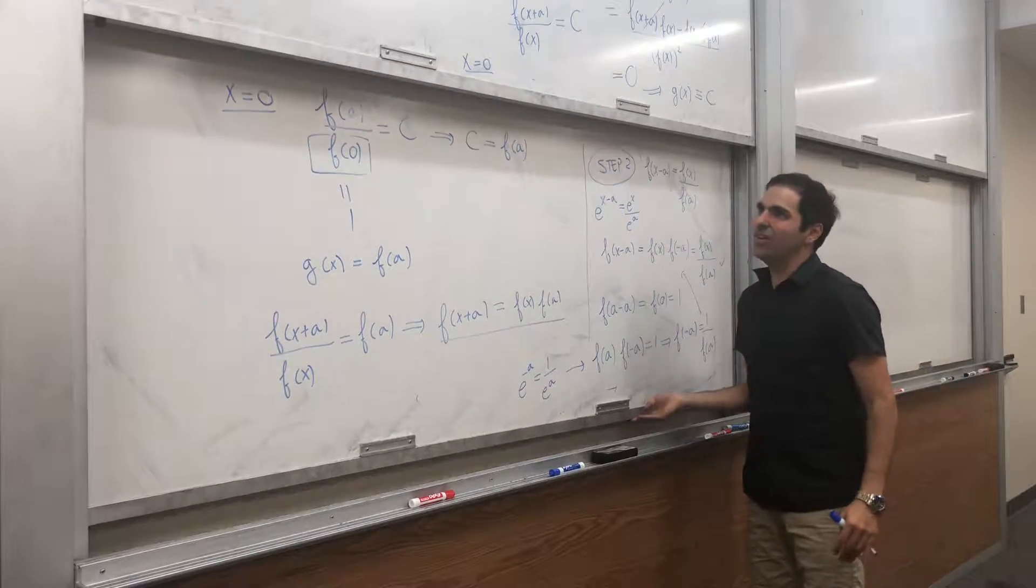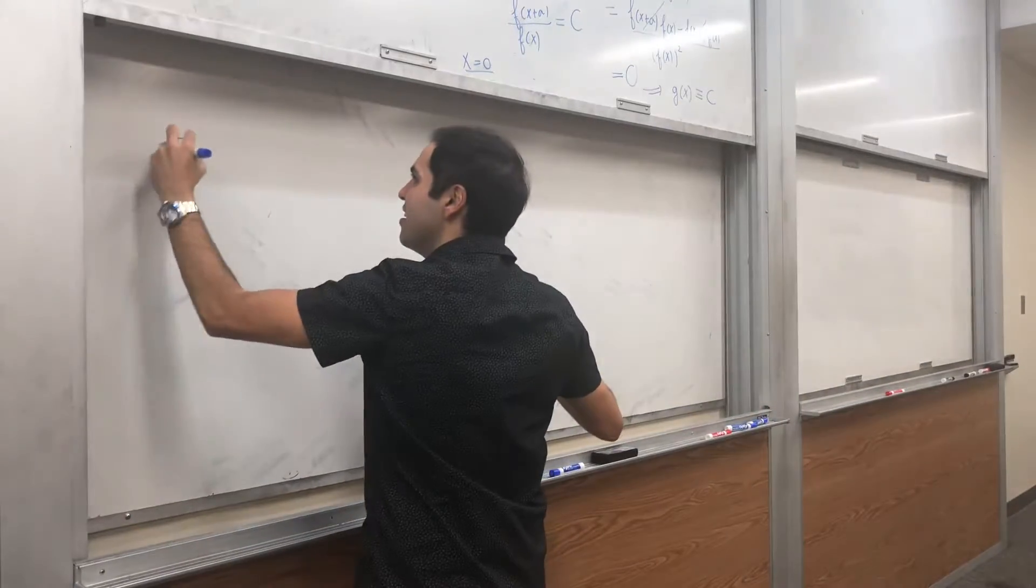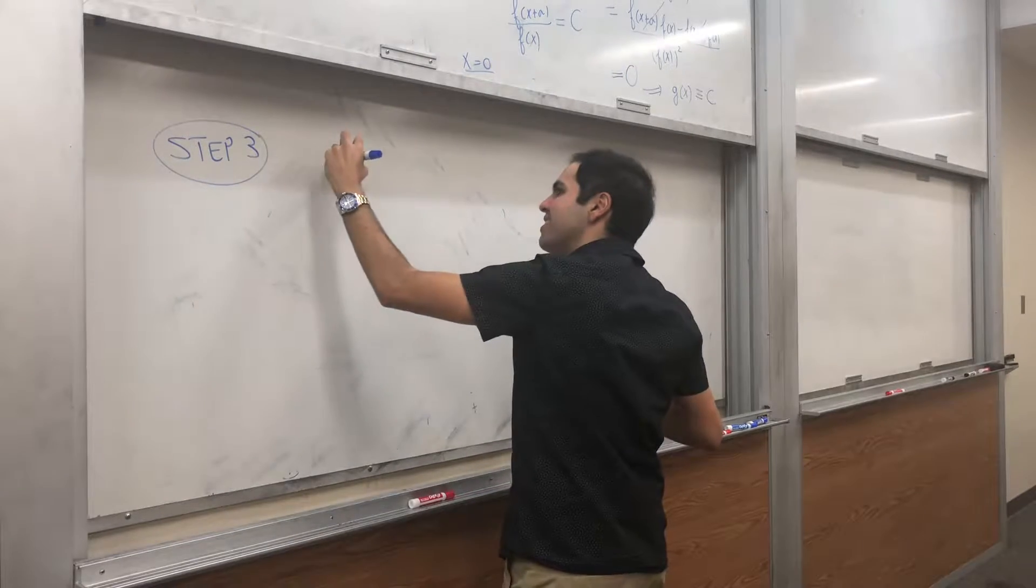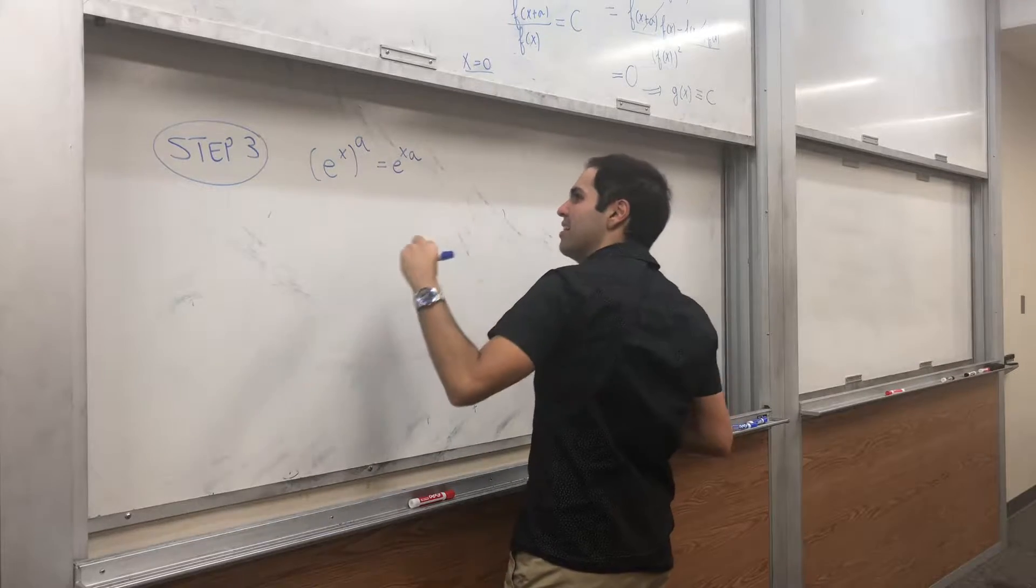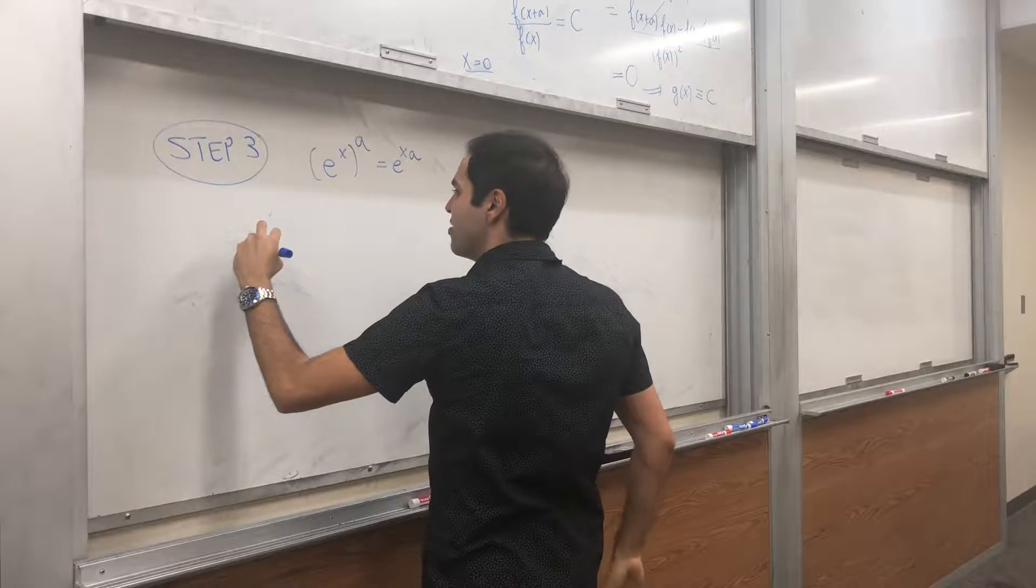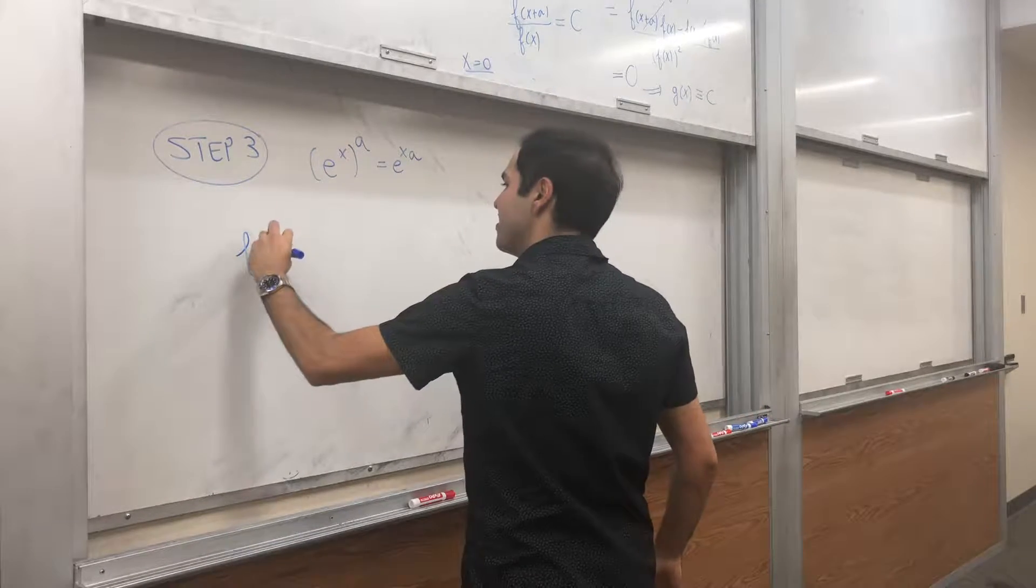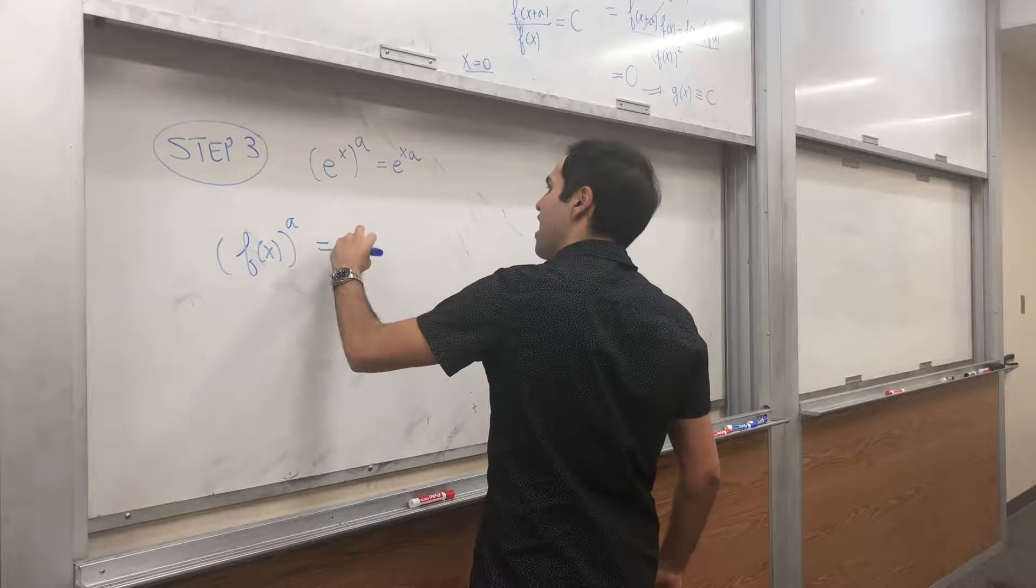Last but not least, let's show the third property of e to the x. So, step three. Let's show basically that e to the x to the a is e to the x a. So, in other words, let's show f of x to the ath power is f of x a.